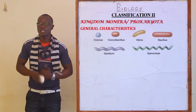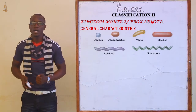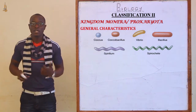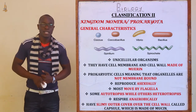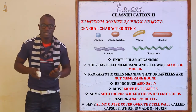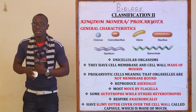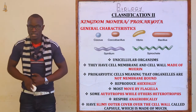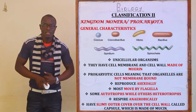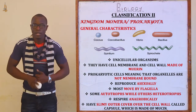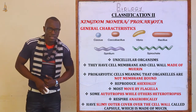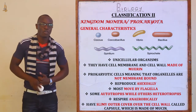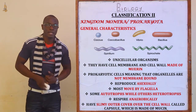Let's look at the first kingdom, Kingdom Monera or Kingdom Prokaryota. What are the general characteristics? Remember, general characteristics means they may share these characteristics with other organisms. The first characteristic is that these organisms are unicellular.